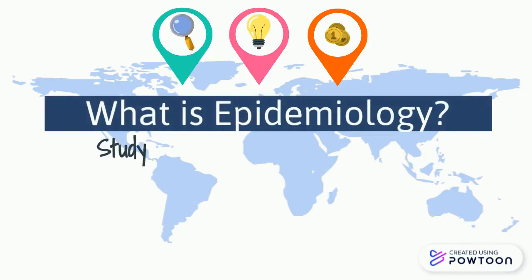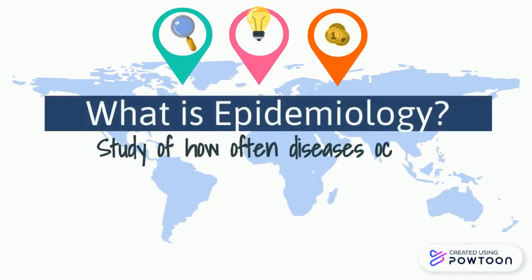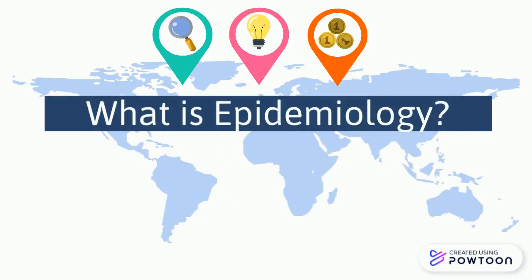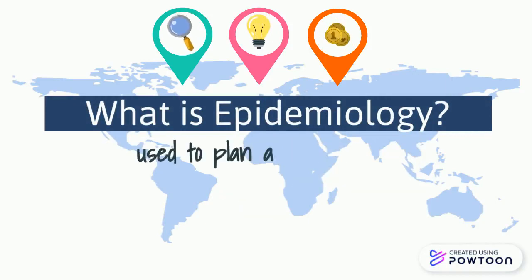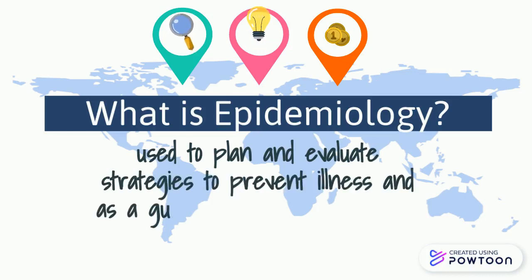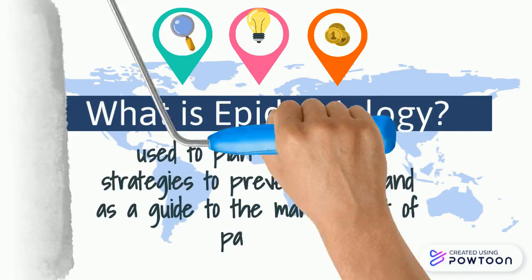Epidemiology is the study of how often diseases occur in different groups of people and why. Epidemiological information is used to plan and evaluate strategies to prevent illness and as a guide to the management of patients in whom disease has already developed.